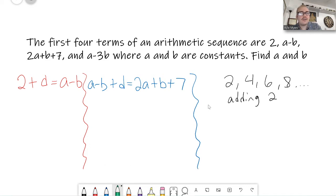And then the last one would be, okay, well, if I want to go from 2a plus b plus 7 to the next term in the sequence, I'd have to add d again. And then that gives me a minus 3b. So now what I have are three very ugly looking equations, but you can solve them.